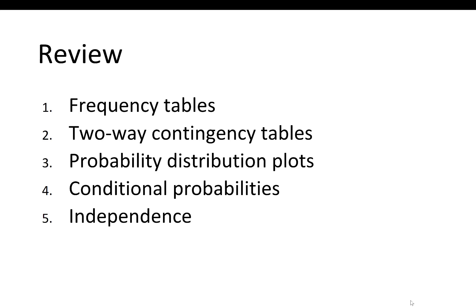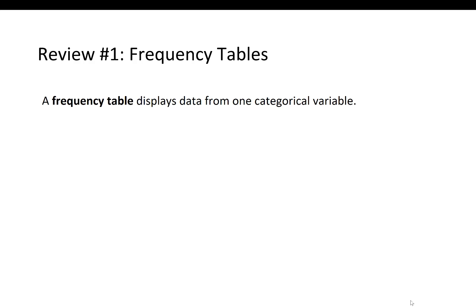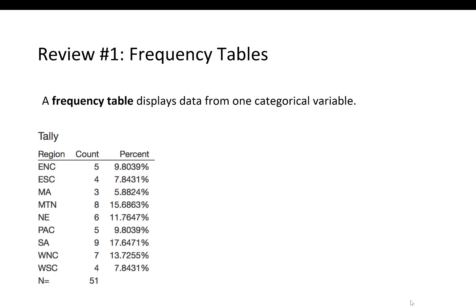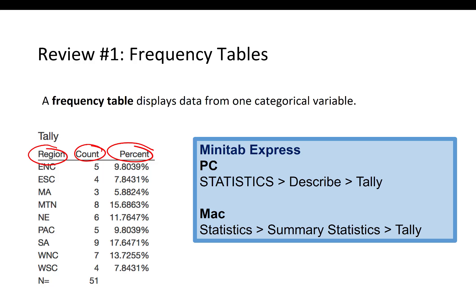Before we begin, there are several topics I want to review. These were all introduced in Lesson 2 when we learned how to summarize and display data concerning one and two categorical variables. Let's start by reviewing frequency tables. A frequency table displays data from one categorical variable. When I make frequency tables, I usually include the name of the category, the frequency count, and the percentages. The steps to construct a frequency table in Minitab Express can be found in the review section of this week's online notes.